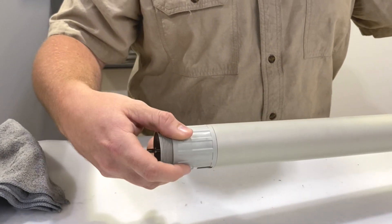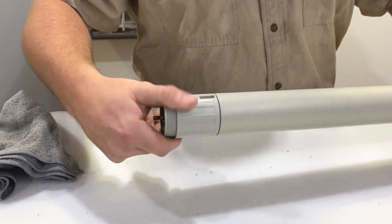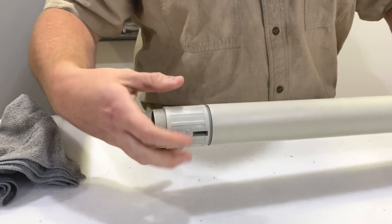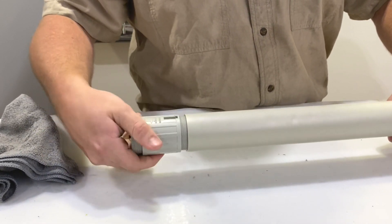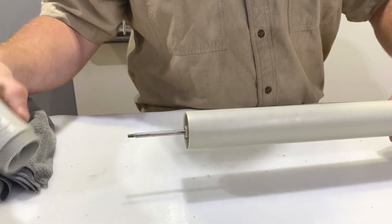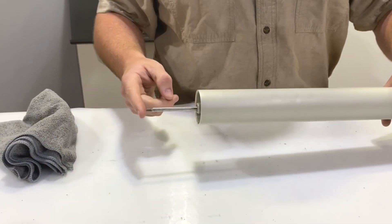Also reverse thread is the bearing housing, so we'll thread that off. It slides off the end of the pump shaft.